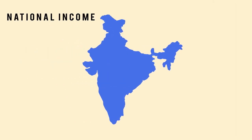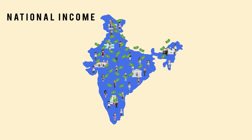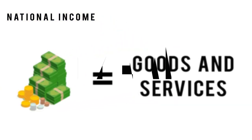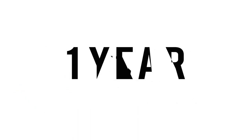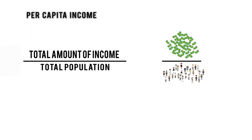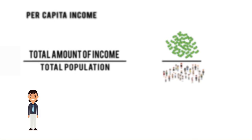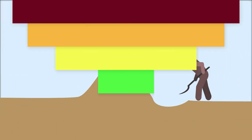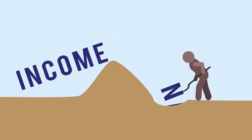National income is the total income earned by all the people and institutions within a country from the production of goods and services, usually measured over a period of one year. Per capita income is the total amount of income earned by all people and institutions within a country divided by the total population.